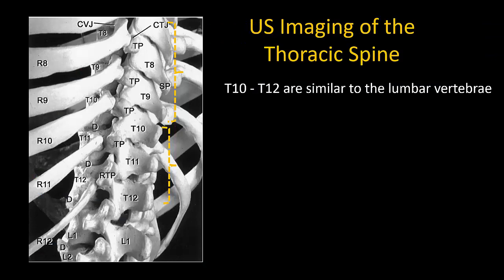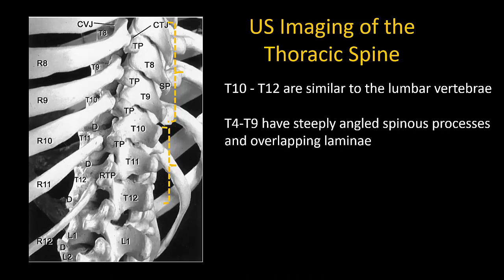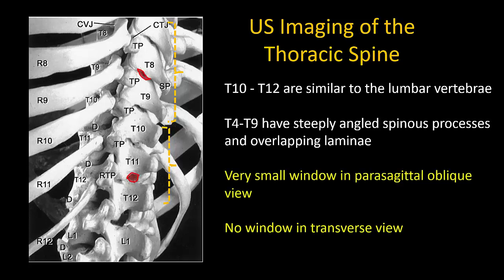A good understanding of spinal anatomy is essential to using ultrasound imaging. The morphology of the thoracic spine varies by level. The lower thoracic vertebrae are similar to the lumbar vertebrae in shape, whereas the mid and upper thoracic spine, particularly in the T4 to T9 area, have steeply angled spinous processes and laminae that overlap each other. This leads to very small imaging windows in the parasagittal oblique view and no acoustic window into the vertebral canal at all in the transverse view.